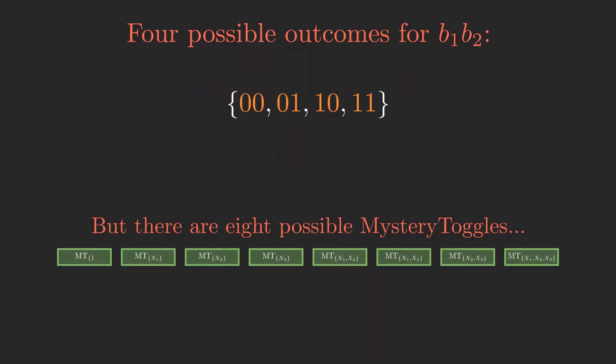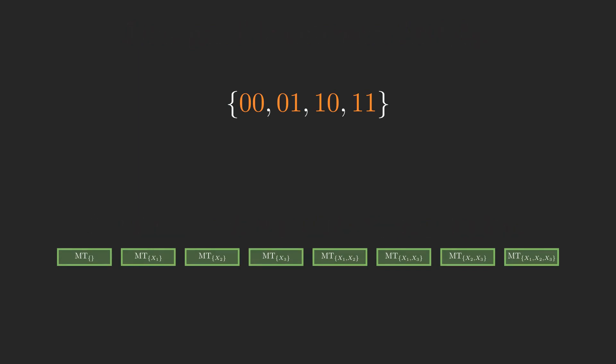So, without even knowing how the algorithm works, we can conclude that any algorithm that decides which out of these eight possibilities to output based only on looking at these two bits of information is wrong, since there is simply no way to match up each one of the four outputs with the eight possibilities for mystery toggles without leaving four of those possibilities unaccounted for. We just don't have enough information here.